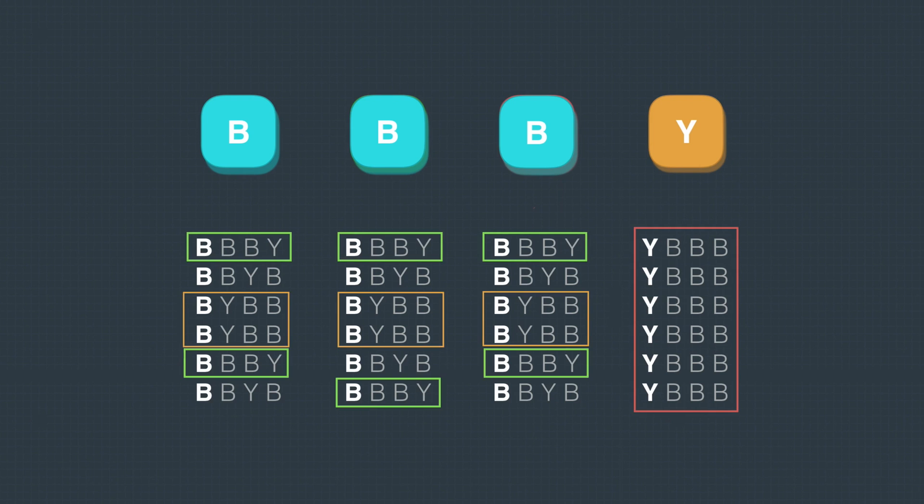So here comes the problem: whenever objects are repeated the number of permutations will actually reduce.